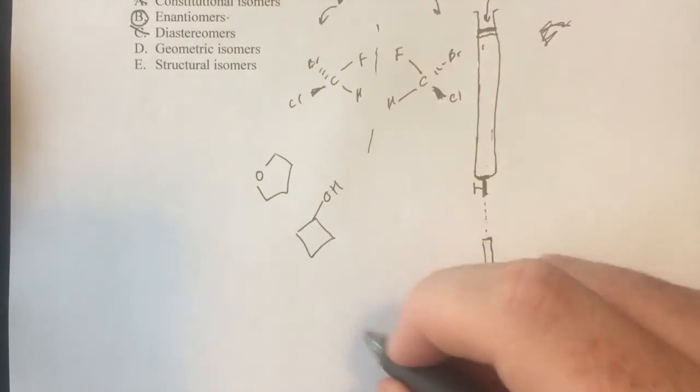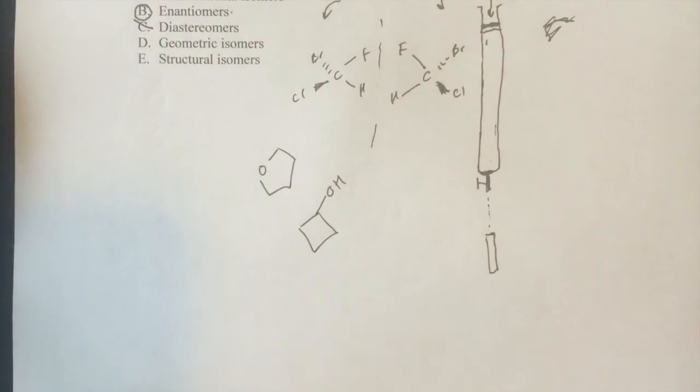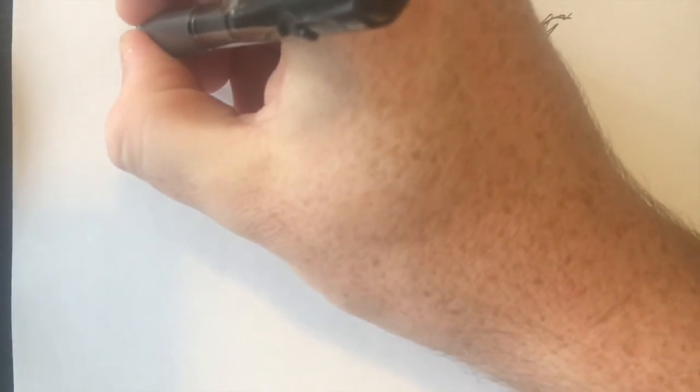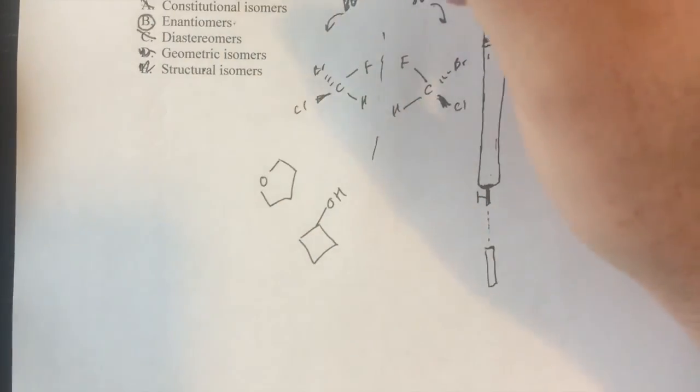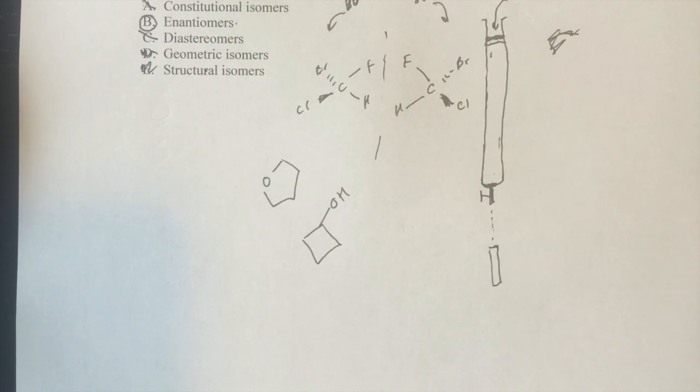So the diastereomers definitely can be, geometric isomers for sure, you know, think about like, it's basically cis-trans, they will have different physical properties and the same, structural isomers is just another word for constitutional, so that's also out. So the correct answer here definitely is going to be B.